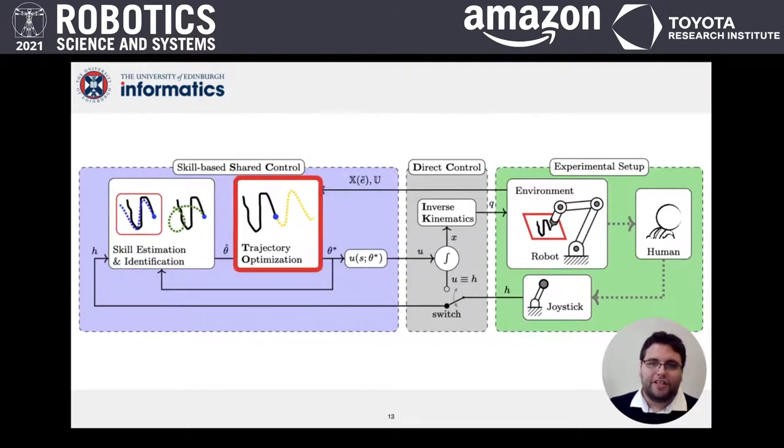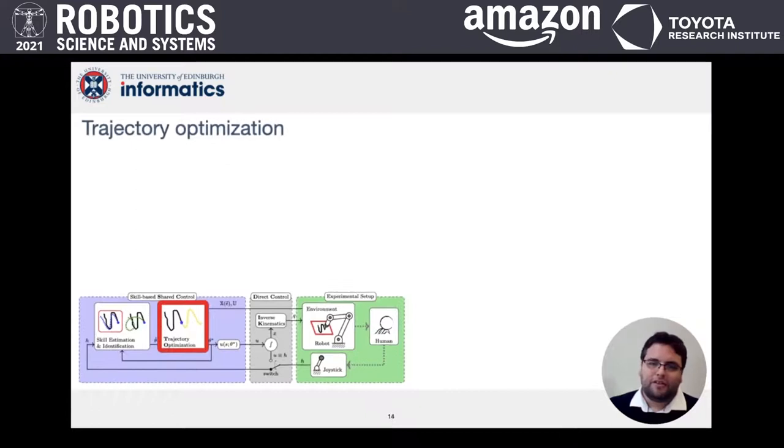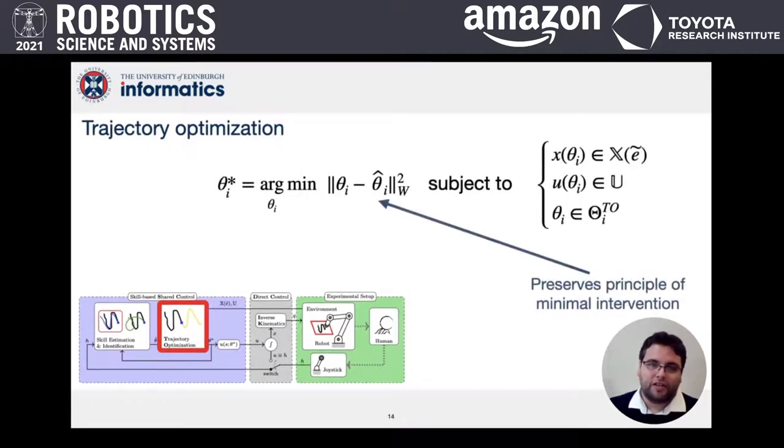The estimated intention is passed to a trajectory optimization step, which, subject to constraints, optimizes a convex cost function offset by the estimated intention. This preserves the principle of minimal intervention, which is important for the user's acceptance of shared control systems.